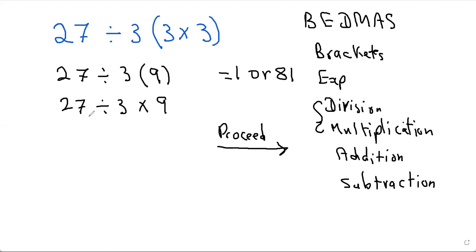So therefore you go from left to right, which means you do the 27 divided by 3 first, which gives you 9 times 9. And now 9 times 9 is 81. And that's your right answer.